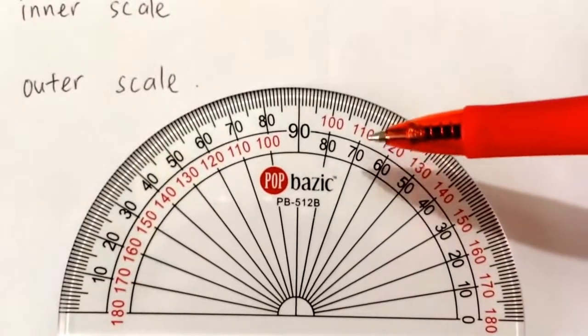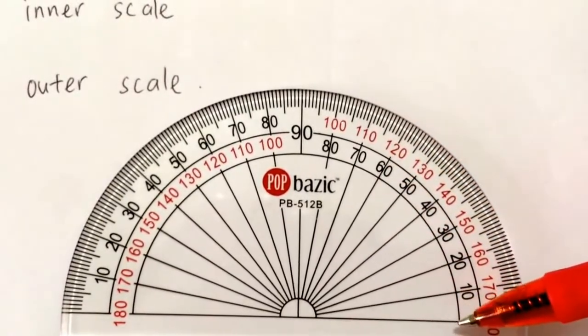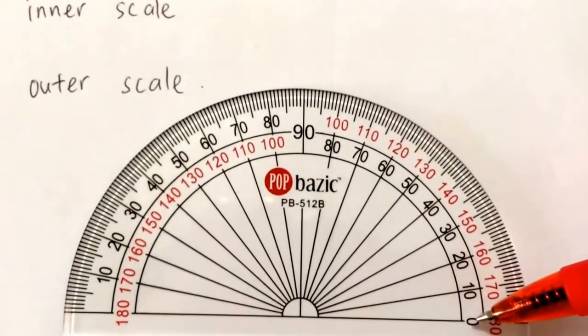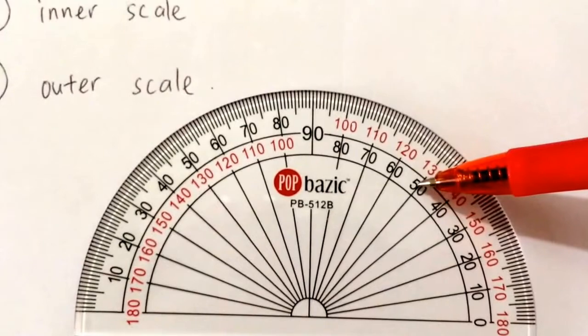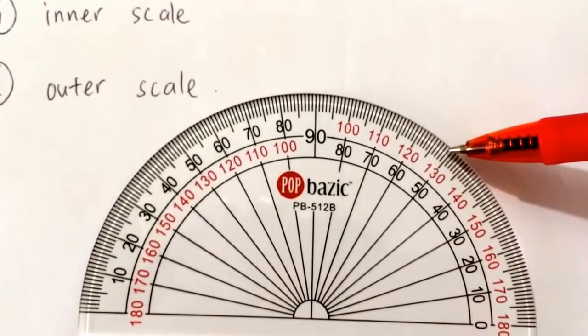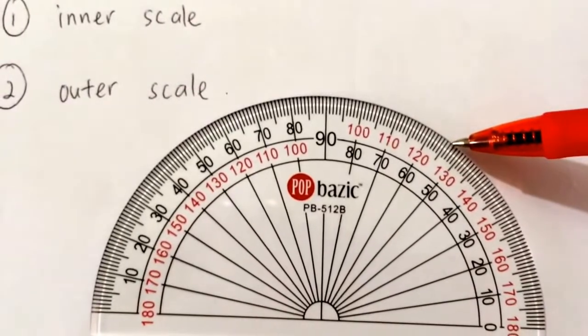Again, let's try. Let's say I am reading from the inner scale and I want 54. Inner scale: 0, 10, 20, 30, 40, 50, 51, 52, 53, 54. 54 will be here.